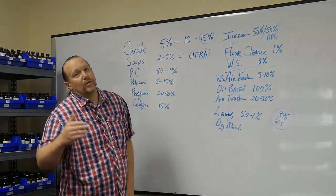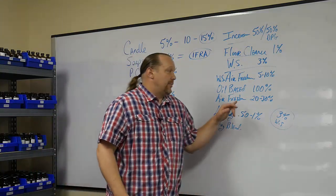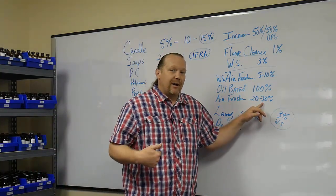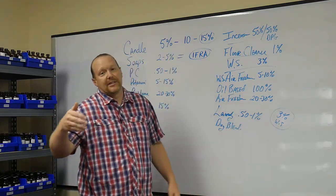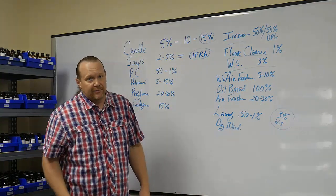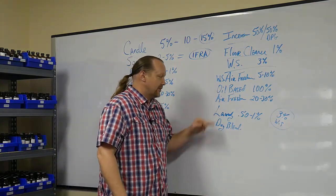Air freshener, oil-based, but you want to make your own cut. So it'd be 20 to 30% our fragrance and then you would make up to 70, 80% with whatever you were going to cut the fragrance with. Air fresheners, multiple choices.